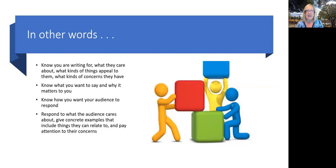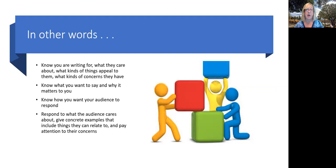Reed's point is that you need to know who you're writing for, what they care about, what kinds of things appeal to them, what kinds of concerns they have. And then you have to know what you want to say and why it matters to you, and know how you want your audience to respond. And then in your writing, you respond to what the author cares about, give concrete examples that include things they can relate to, and pay attention to their concerns. In other words, write about what you know about, care about, are passionate about, are curious about. It's worth writing for.